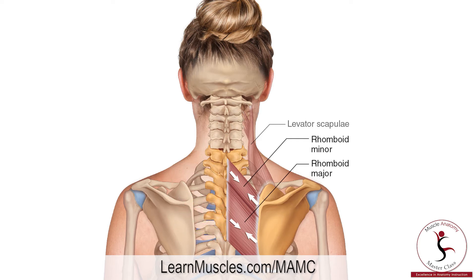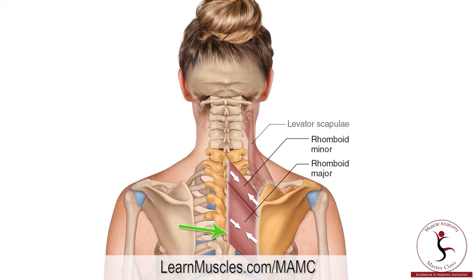More specifically, the proximal attachments of the rhomboid minor are on to the spinous processes of C7 and T1, and the proximal attachments of the rhomboid major are on to the spinous processes of T2 down through T5.